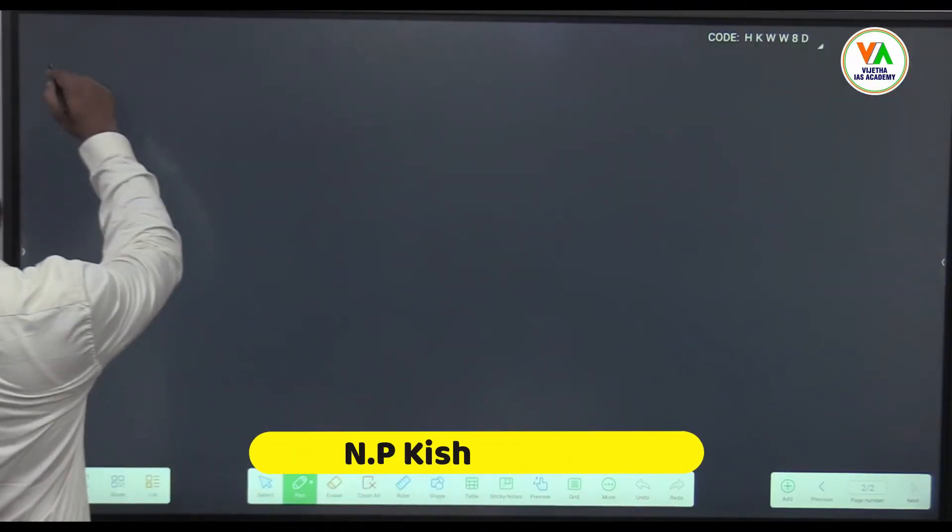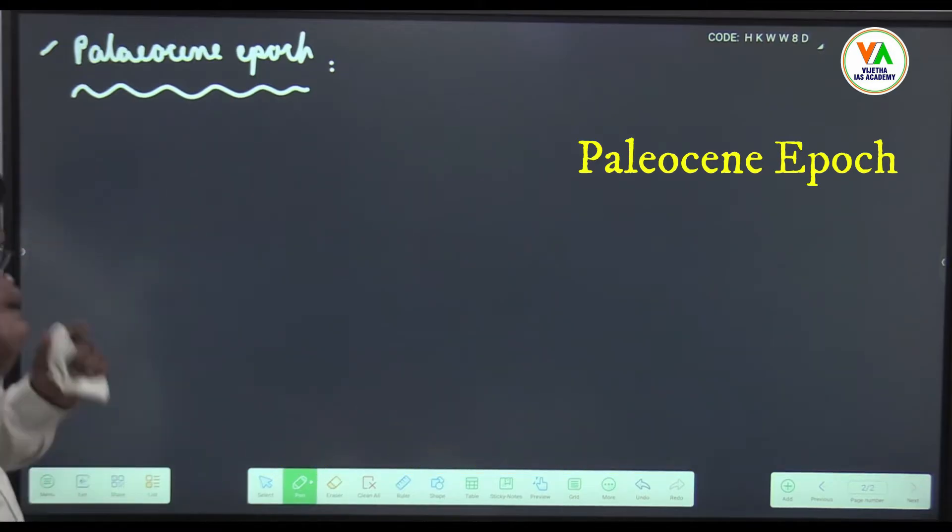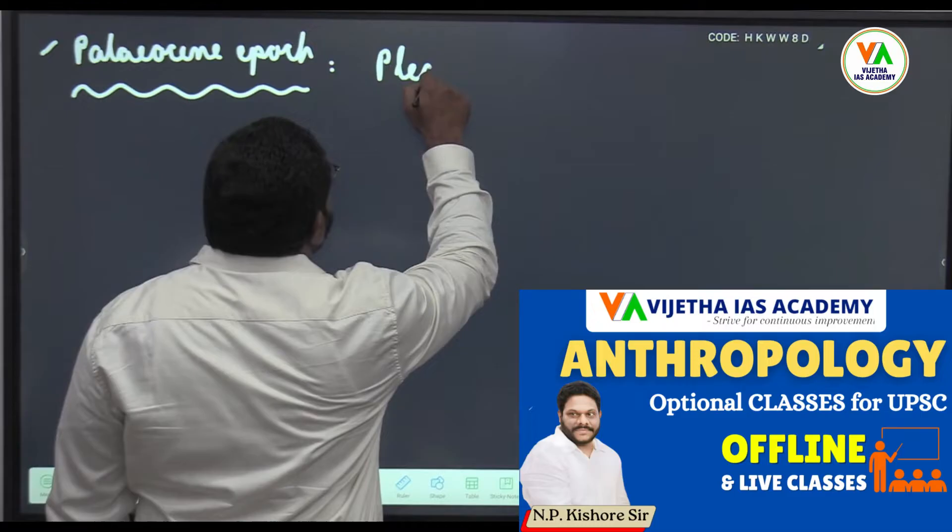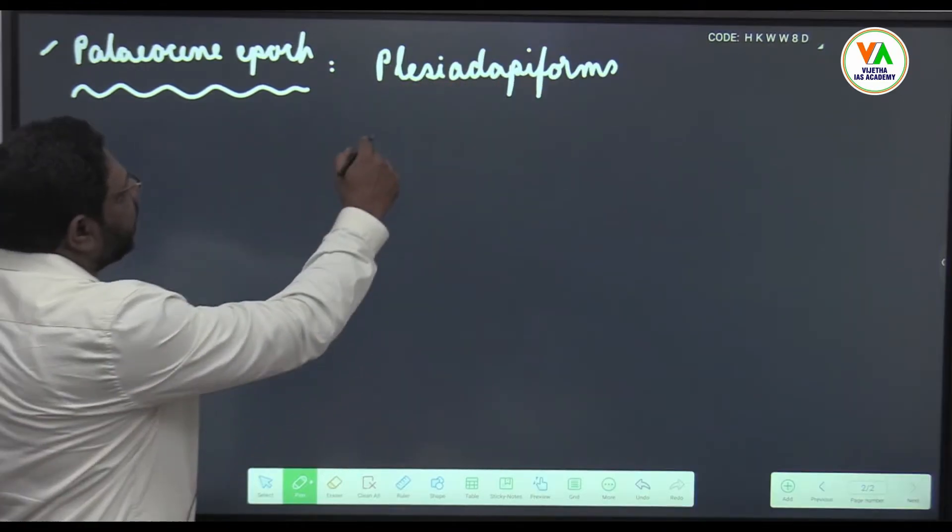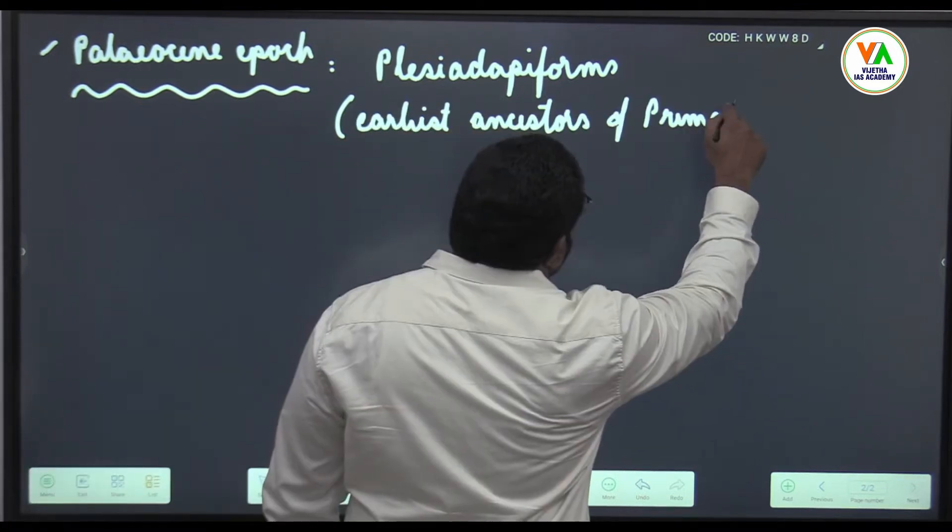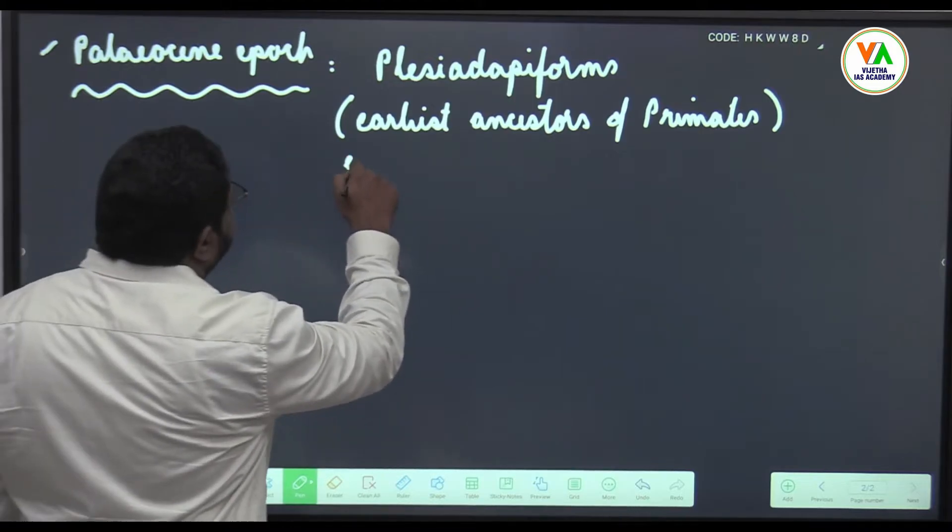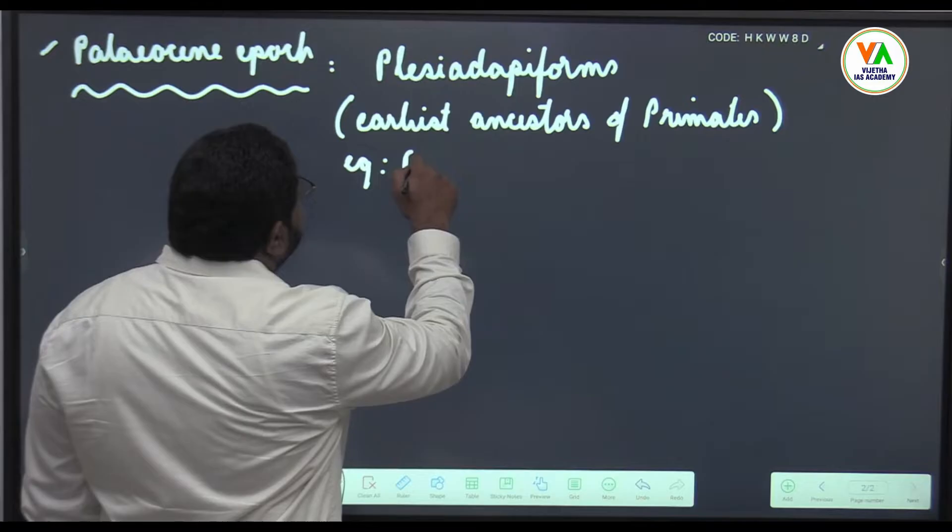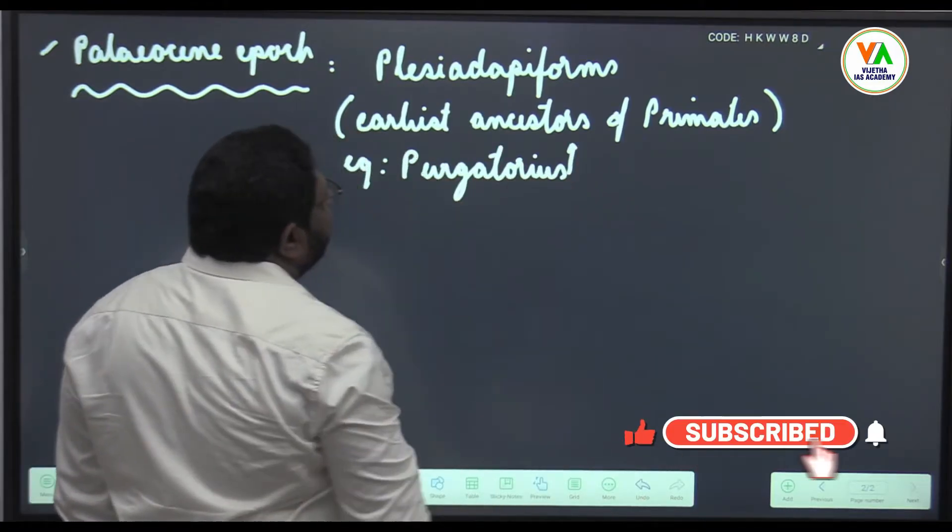Starting from Paleocene epoch, in Paleocene epoch you have some forms known as Placidopiforms. These are considered to be some of the earliest ancestors of primates. After Paleocene epoch, one of the examples here of this Placidopiforms is Purgatorius. This is the earliest primate looking mammal.